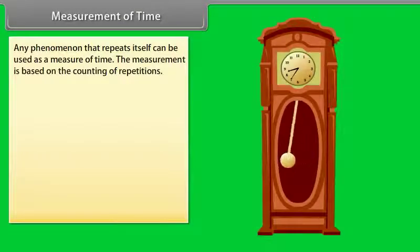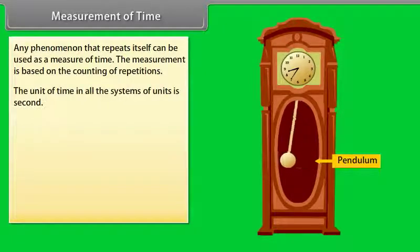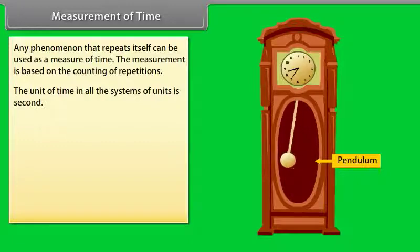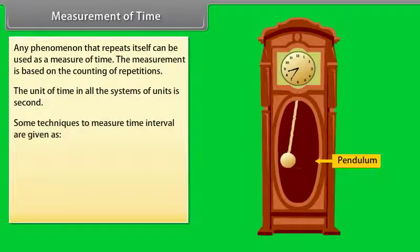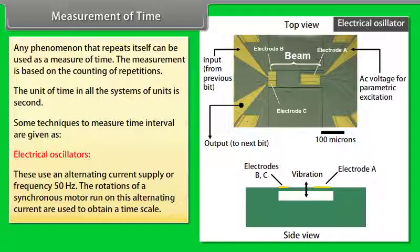Measurement of time: Any phenomenon that repeats itself can be used as a measure of time. The measurement is based on the counting of repetitions. The unit of time in all the system of units is second. Some techniques to measure time interval are given as: Electrical oscillators - these use an alternating current supply of frequency 50 Hz. The rotations of a synchronous motor run on this alternating current are used to obtain a time scale.